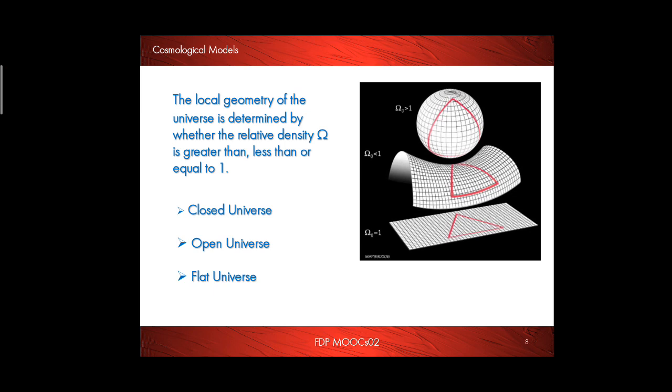The local geometry of the universe is determined by whether the relative density omega is greater than, less than, or equal to 1. If relative density omega is greater than 1, it represents one closed universe. If it is less than 1, then it represents one open universe. And if it is equal to 1, it represents flat universe.